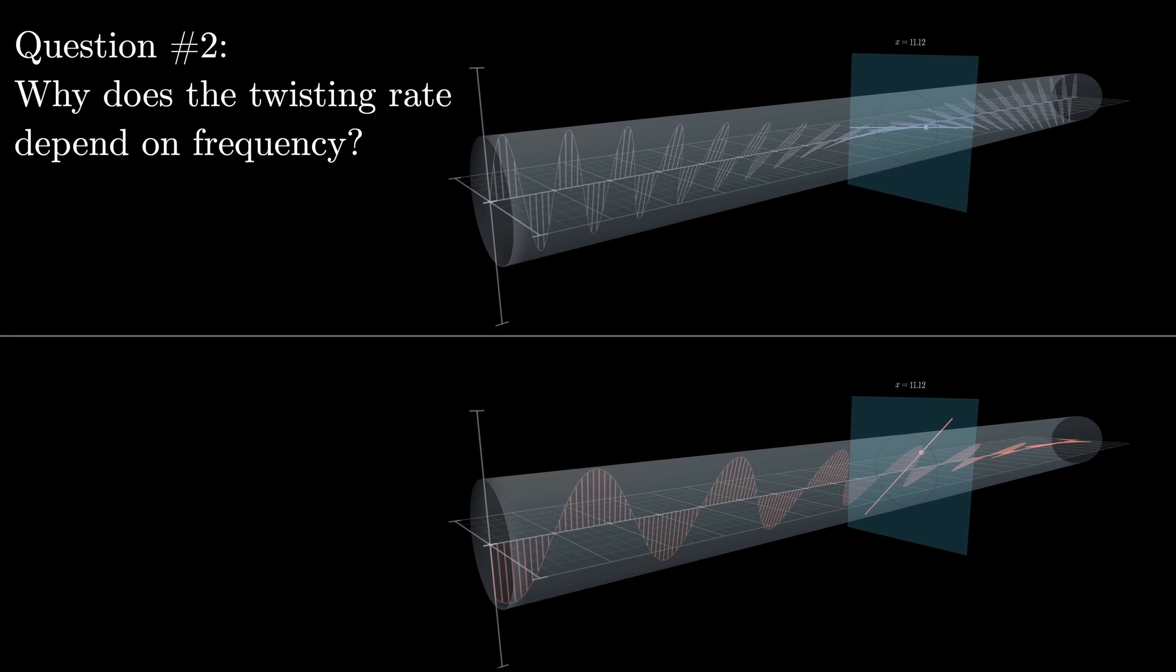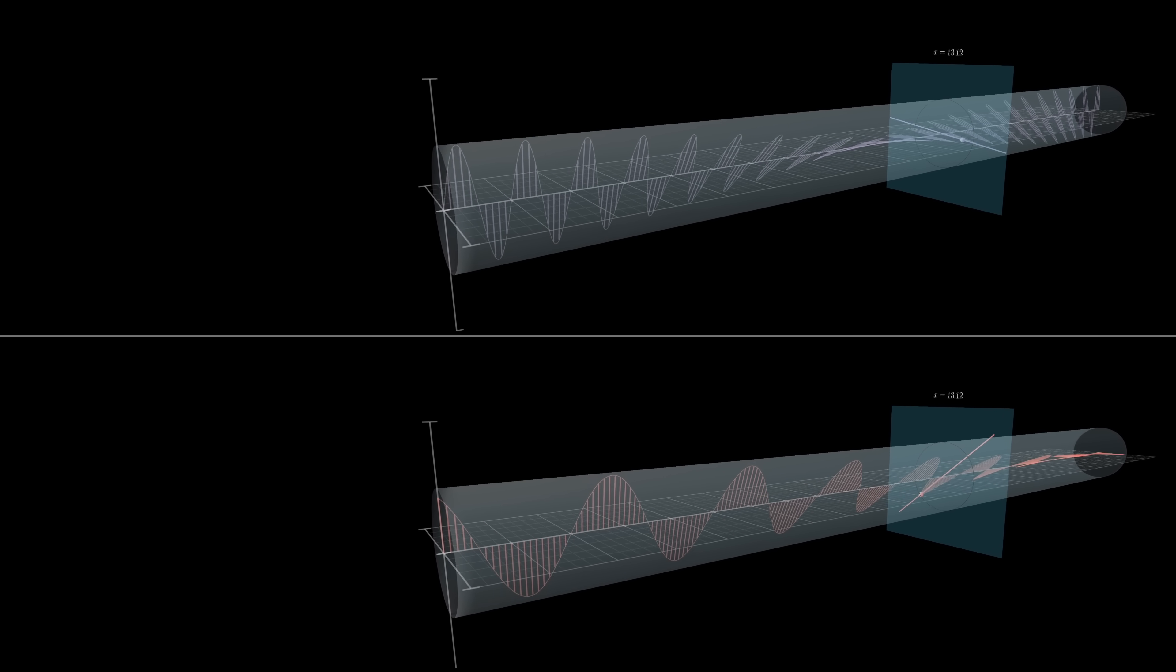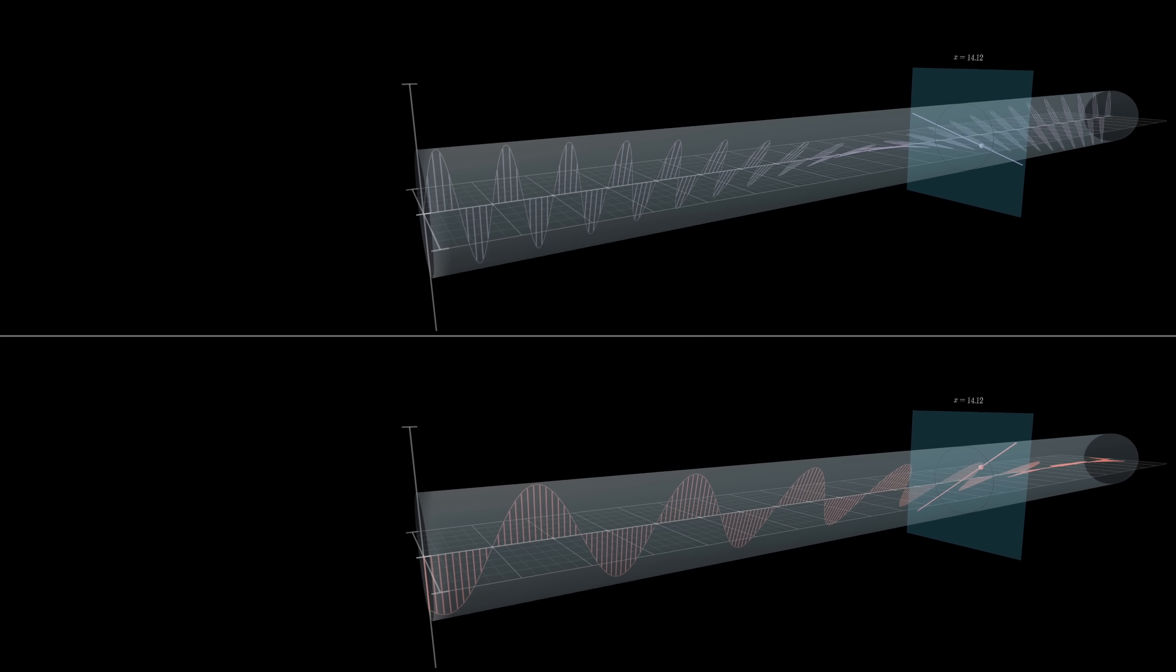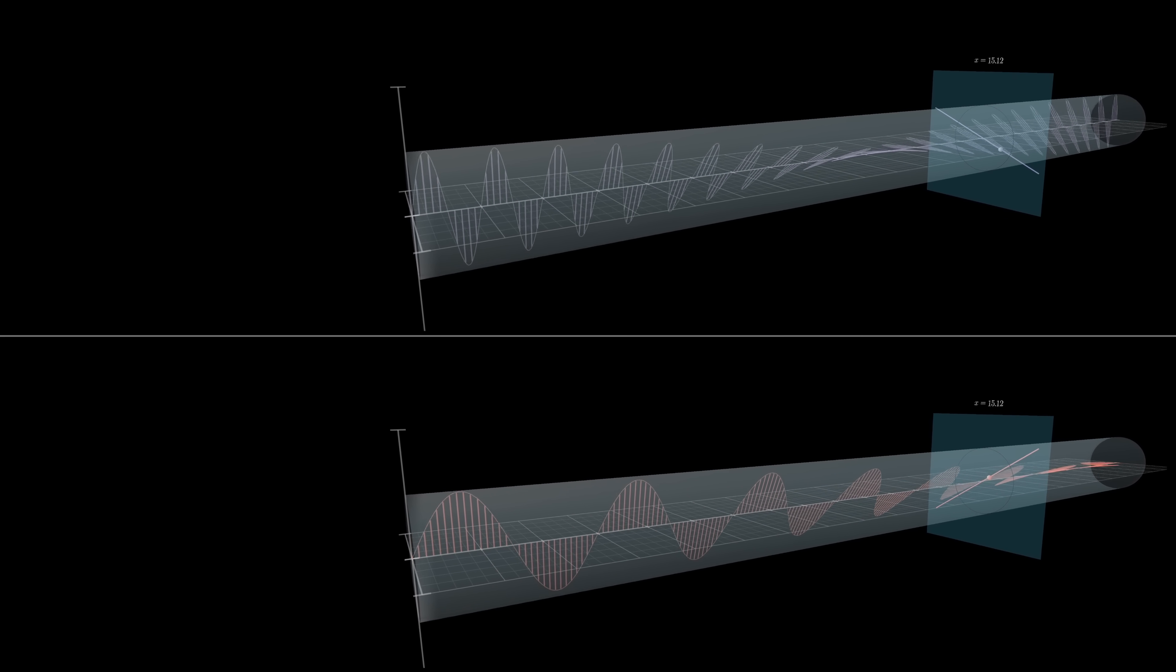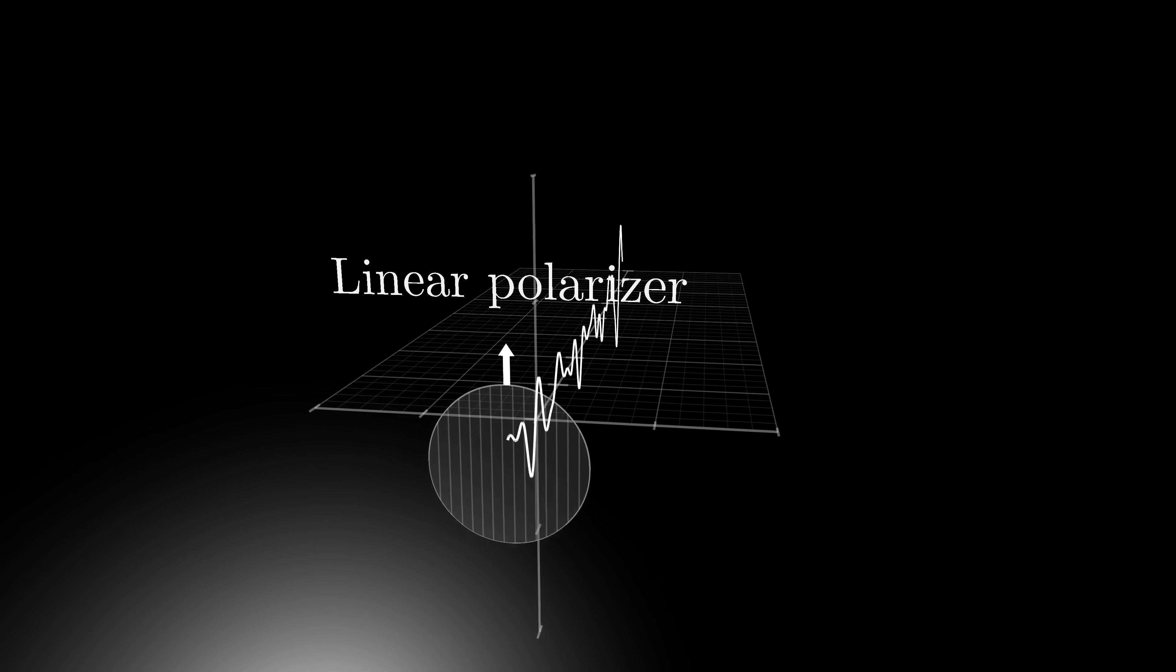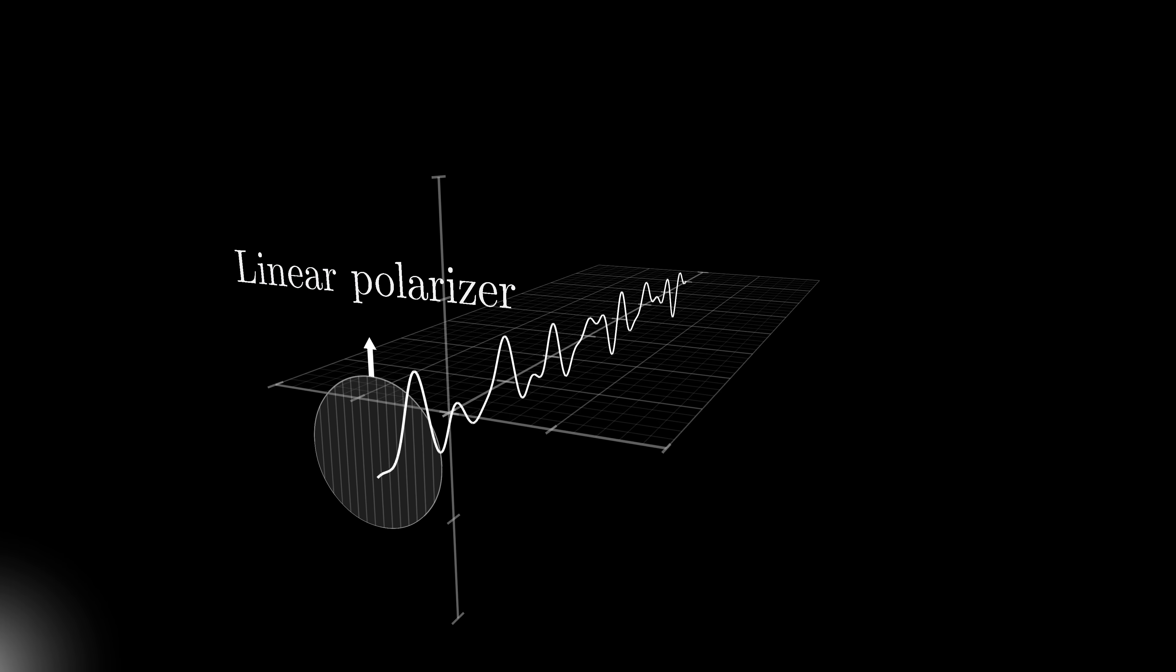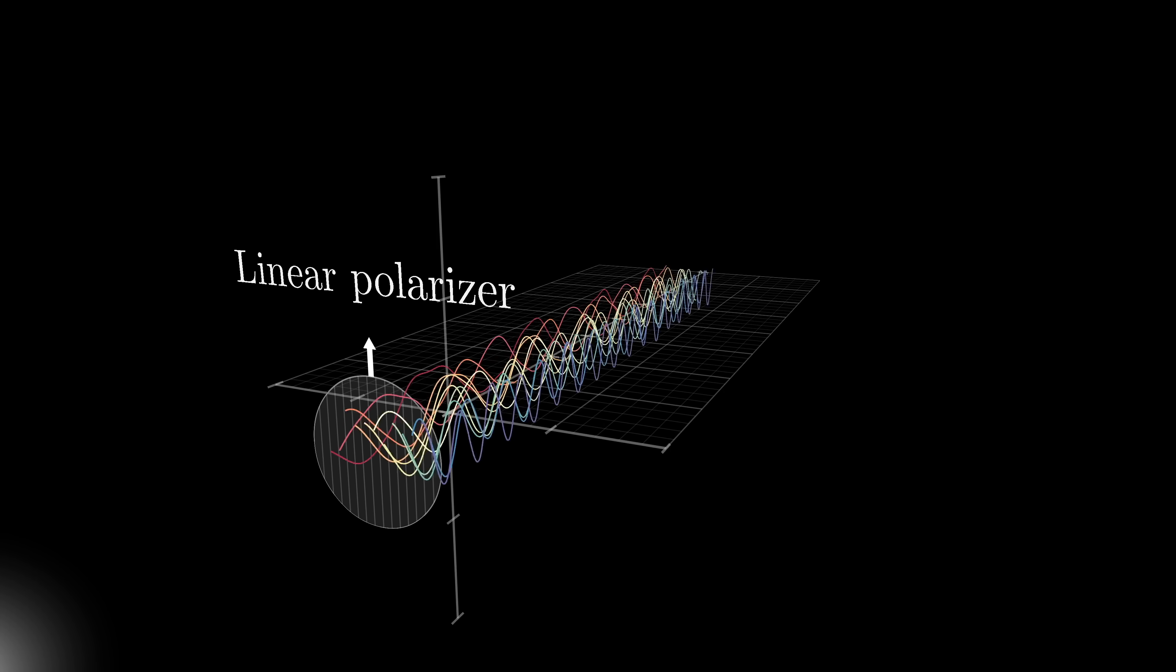Let's take a moment to think about what it means that different colors of light are getting twisted at different rates. In the demo we're shining in white light, and white light is not a clean pure sine wave, it's something more complicated. And you typically think about it as a combination of many different pure sine waves, each one corresponding to one of the colors in the rainbow.